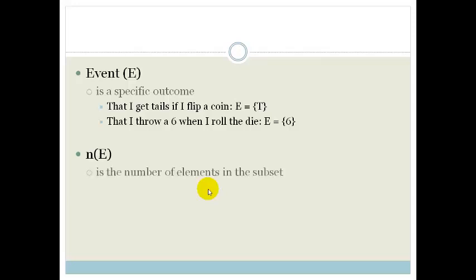Now, N of E is the number of elements in the subset. So in other words, it basically says what could I possibly get as a specific outcome. And in this case, for both of the above, the possibility of me getting a tails is 1. There was 1 element in that set and I got 1 in that. So that is N of E.